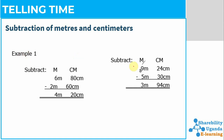Let's get started. Here we are going to make some subtraction. We have been given some examples. Example one: we are given values in meters and centimeters and we need to arrange them in their proper columns. You should arrange them very well before performing the operation.